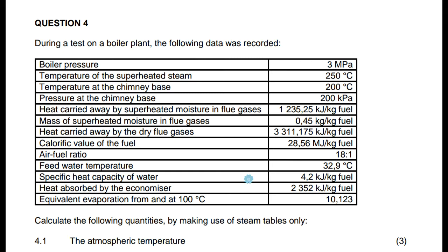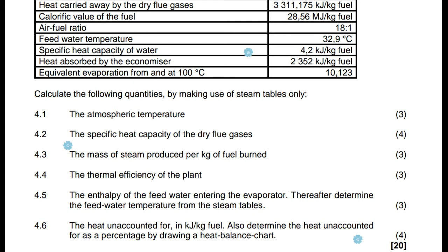The questions say: calculate the following quantities by making use of the steam tables only. 4.1: the atmospheric temperature. 4.2: the specific heat capacity of the dry fuel gases. 4.3: the mass of steam produced per kg of fuel. 4.4: the thermal efficiency of the plant. 4.5: the enthalpy of the feed water entering the evaporator, then determine the feed water temperature from the steam table.